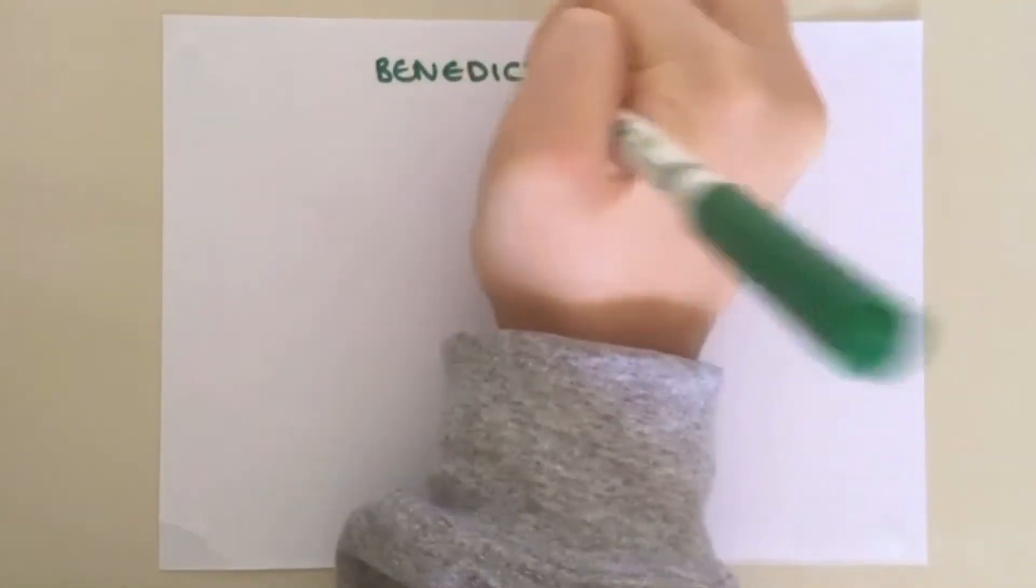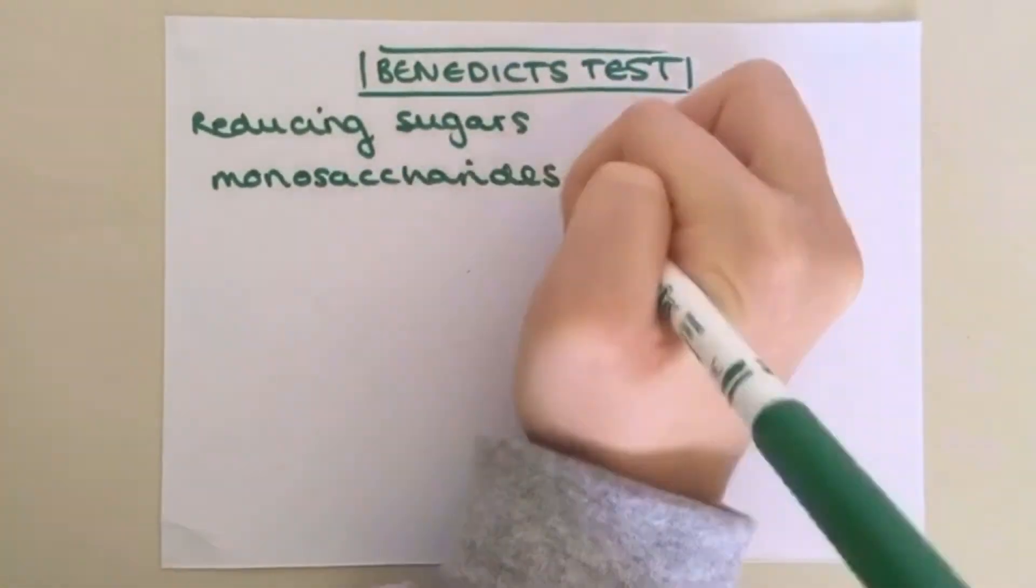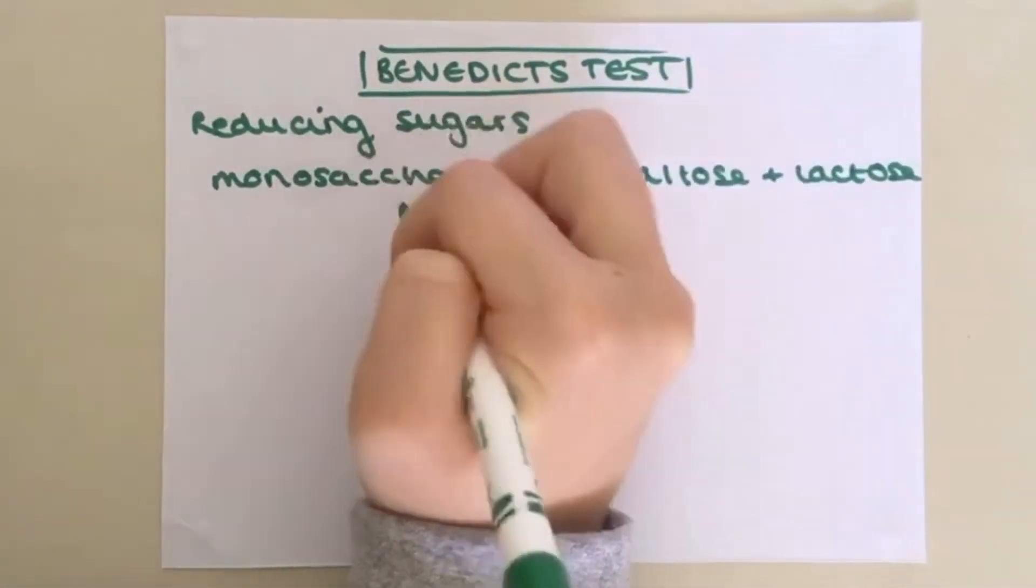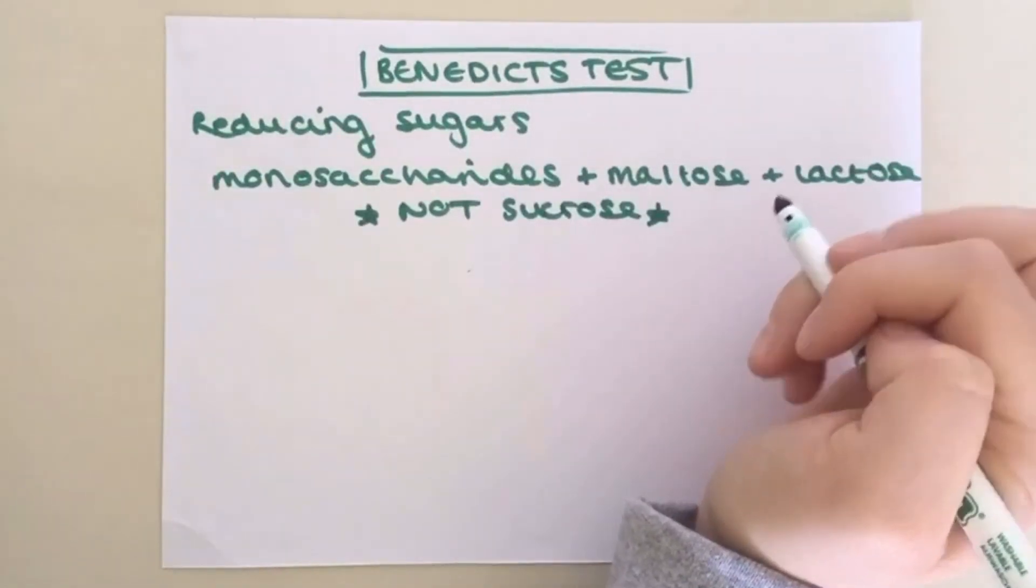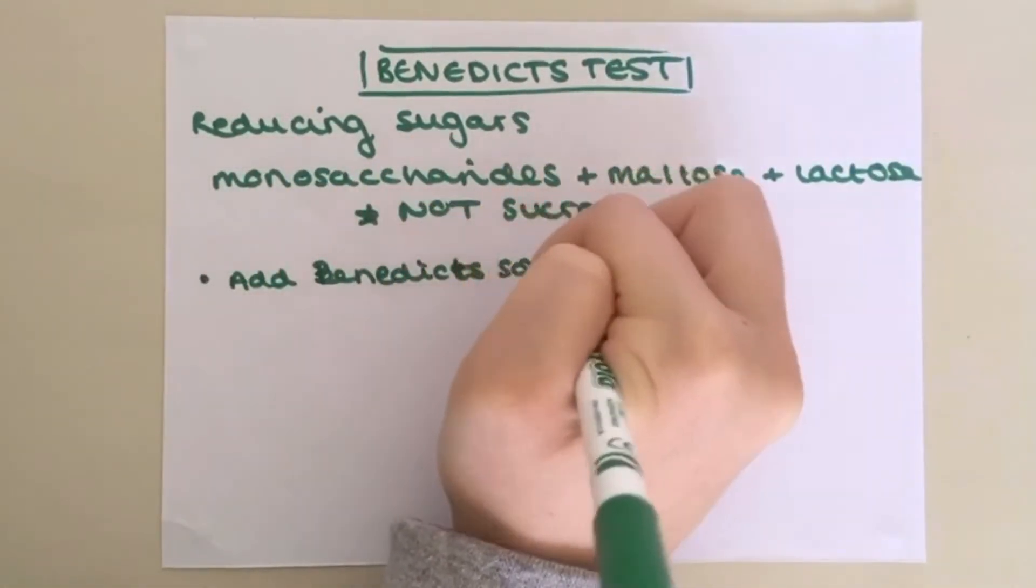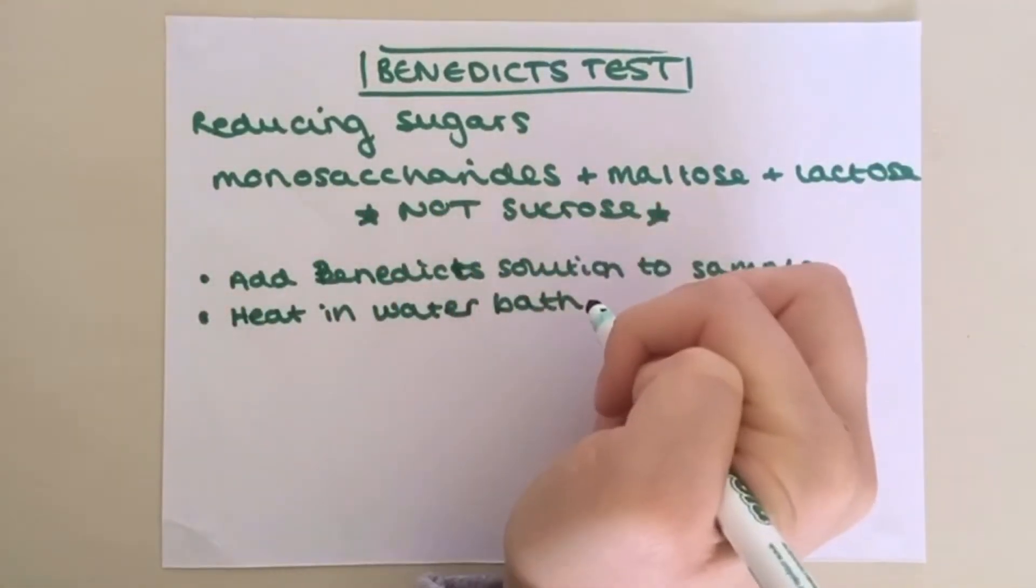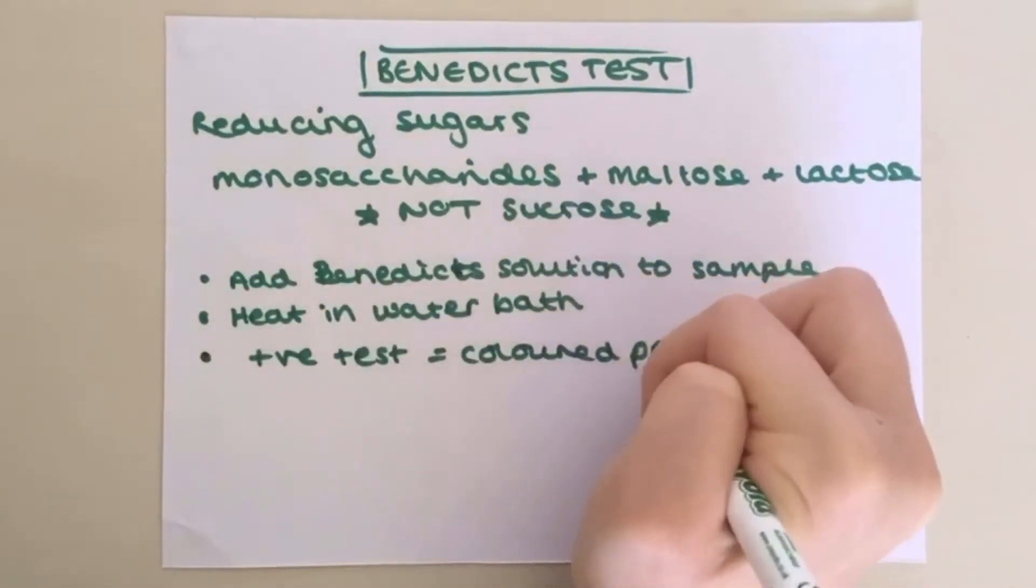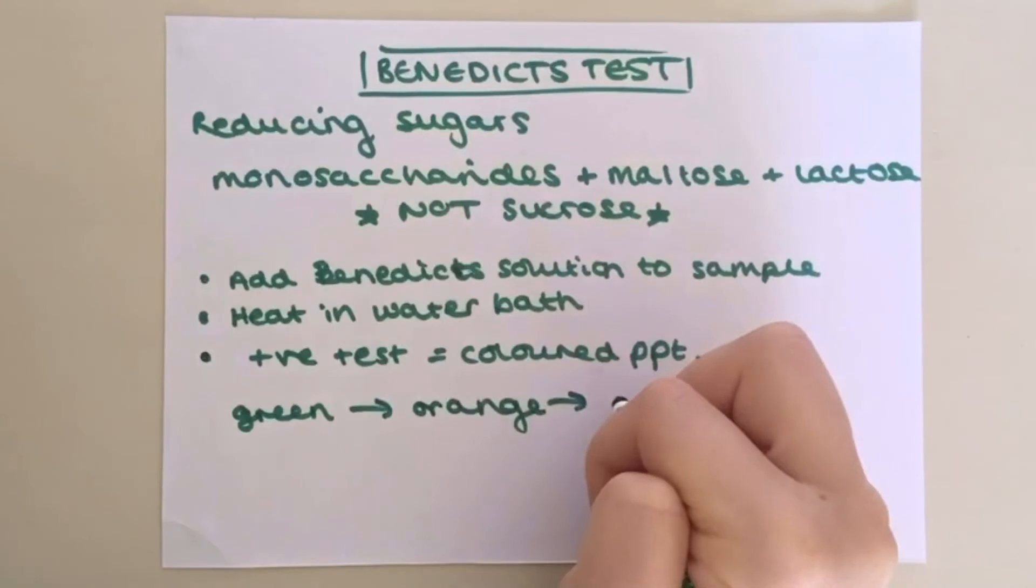The Benedict's test can be used to test for reducing sugars, which includes all monosaccharides as well as the disaccharides maltose and lactose, but not sucrose. The term reducing sugar basically means that it is able to reduce the blue copper sulfate in Benedict's solution to red copper oxide. All you need to do is add Benedict's reagent to your sample and heat it in a water bath that has just been brought to the boil. If the test is positive, a coloured precipitate will be produced. The exact colour will depend on the concentration of reducing sugar present, so it can range from green to brick red.